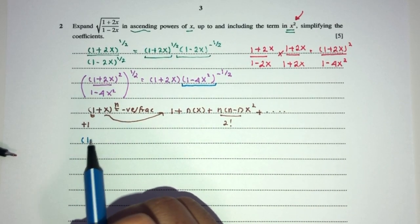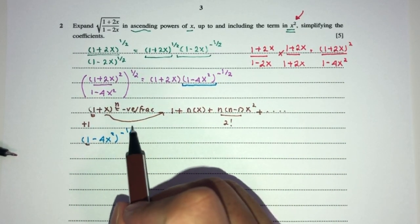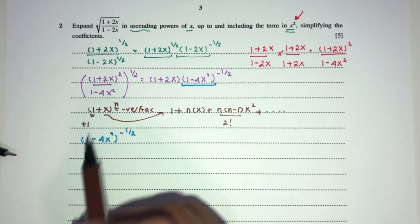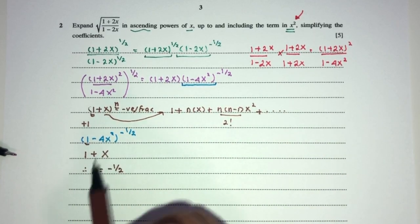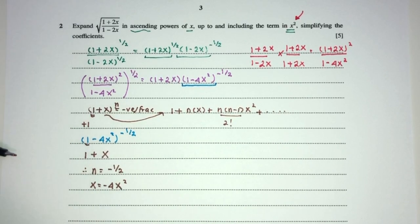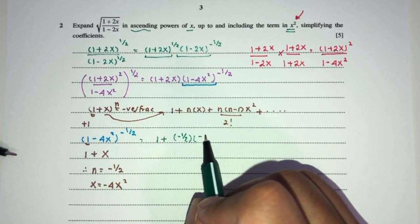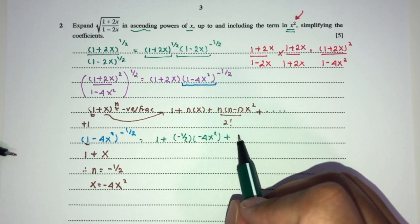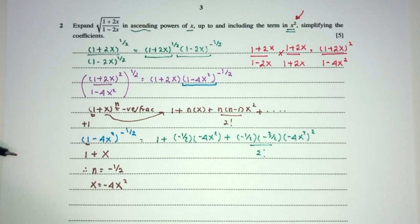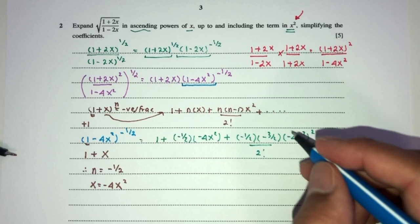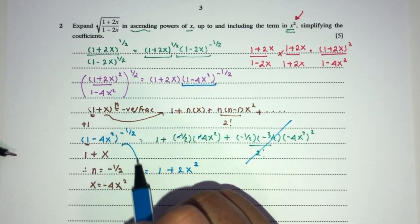We have to expand (1-4x squared) to the power minus half. This starts with plus 1, good, and n is negative, good. By comparison with (1+x) to the power n: n equals minus half, and x corresponds to minus 4x squared. Replacing back: 1 plus (minus half)(minus 4x squared) plus [(minus half)(minus 3/2)(minus 4x squared) squared] divided by 2 factorial. We only need up to x squared so we drop higher terms, giving 1 plus 2x squared.